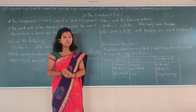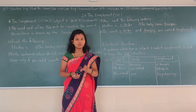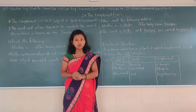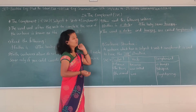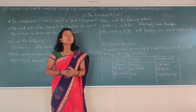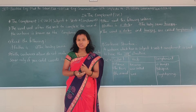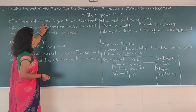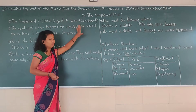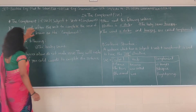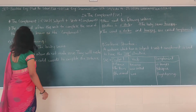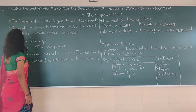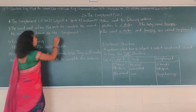Earlier I taught you what SV is. SV denotes subject and verb, and C means Complement. So let's see what the SVC structure is. The word used after the verb to complete the sense of the sentence is known as the Complement.